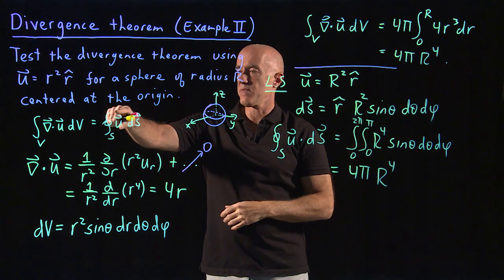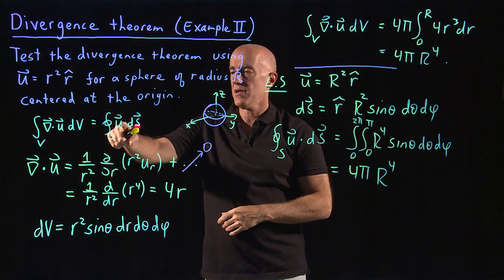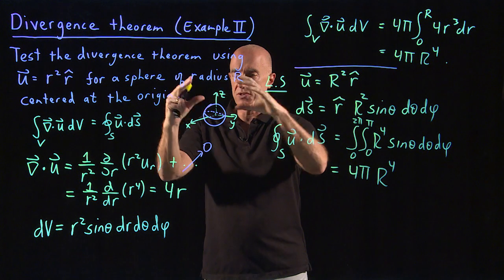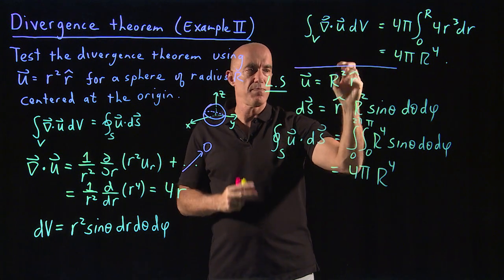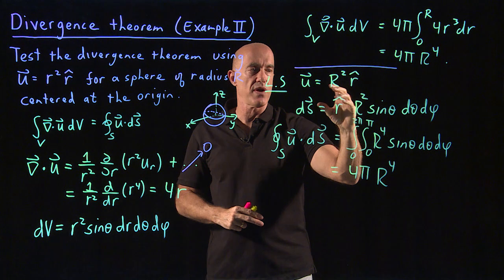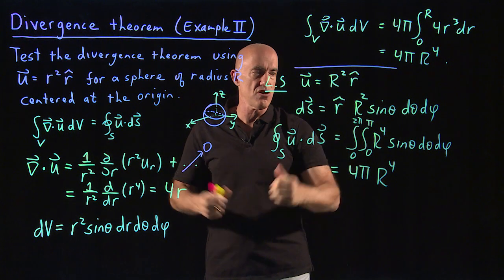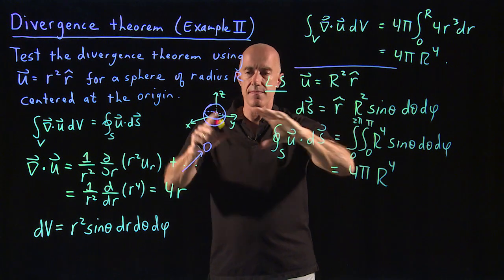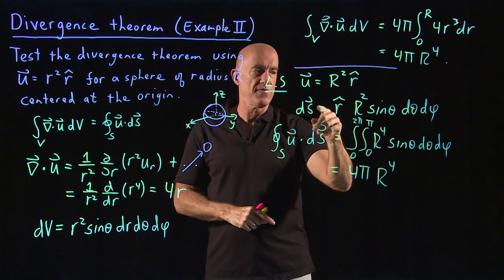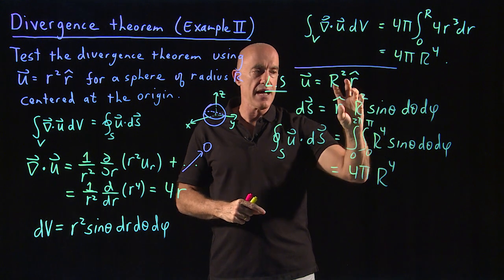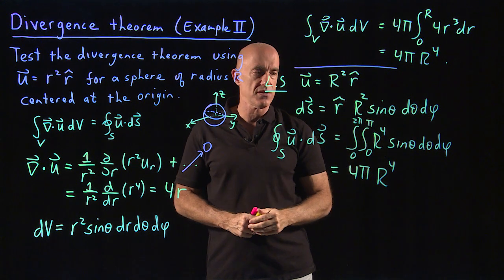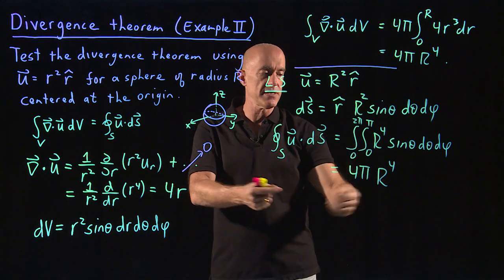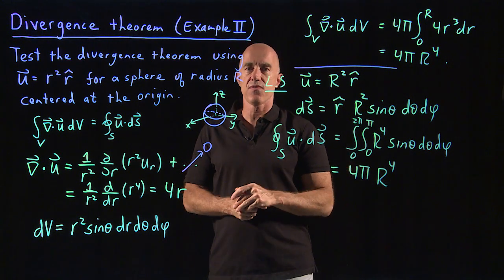On the other hand, if we compute the surface integral of u dot ds, then u on the surface of the sphere is the radius of the sphere, capital R squared, times r hat, the normal vector. ds we get from the angular part of dV times r squared, capital R squared. And that's in the r hat direction. And then we do this integral and again we get 4π R to the fourth.